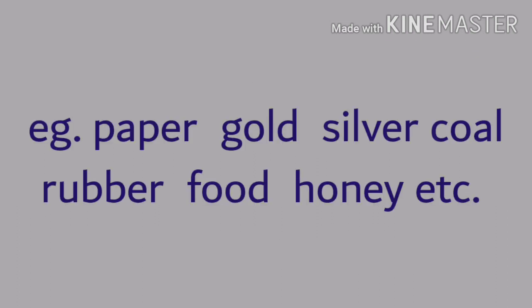Here are a few examples of material nouns: paper, gold, silver, coal, rubber, food, honey, etc. These are examples of material nouns. That's all — see you in the next episode with another classification of noun. Till then, bye.